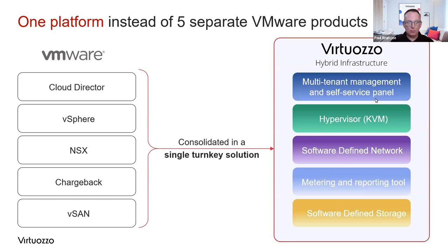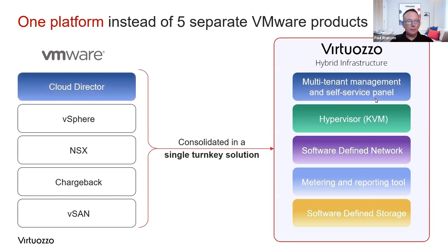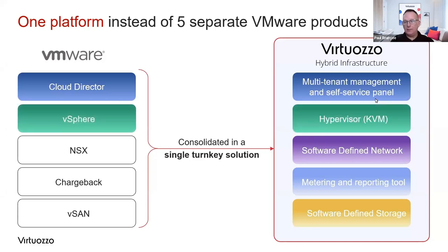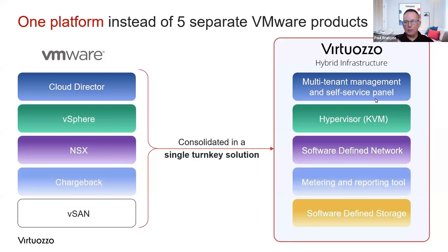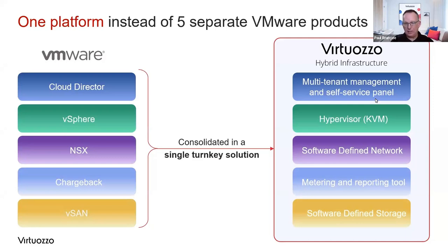This is Virtuoso Hybrid Infrastructure - a platform you're going to see shortly. From a cloud director perspective, we offer standard out-of-the-box multi-tenant management support with self-service capability. From a hypervisor perspective, ours is KVM-based. For NSX or software-based networking, we offer a software-defined networking layer. For chargeback and billing, we have metering and reporting tools. For vSAN, we have a software-defined storage engine - we describe it as a hyper-converged play. We've collapsed all those different VMware products and deliver a turnkey solution through Virtuoso Hybrid Infrastructure.